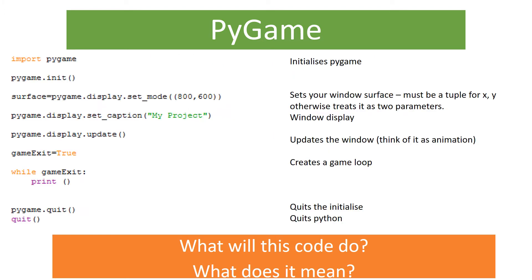Let's have a look at some basic code. The first thing to notice is you need to import Pygame at the top — this brings the Pygame library into Python. We then use pygame.init, which initializes Pygame and allows us to start using the software. We then need what's called a window surface, so we can display a box on the screen with our project inside it. I've given this the variable name 'surface', so surface equals pygame.display.setMode, and we're setting the size of the window — 800, 600 — using a tuple format with circular brackets.